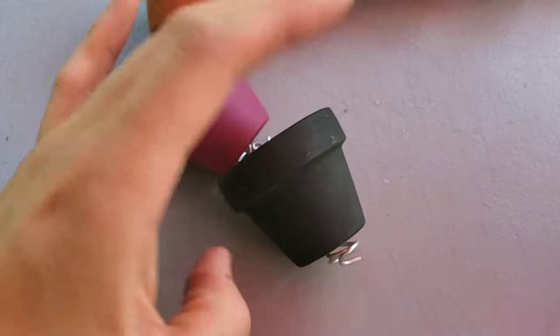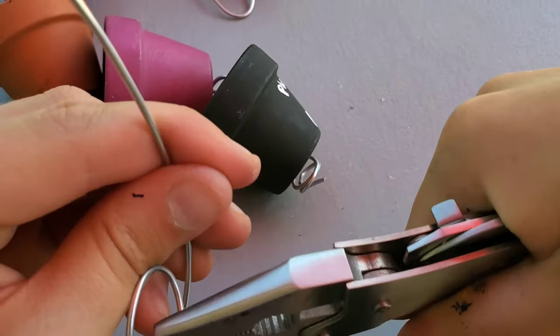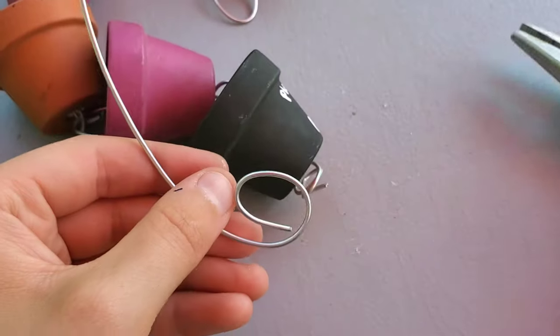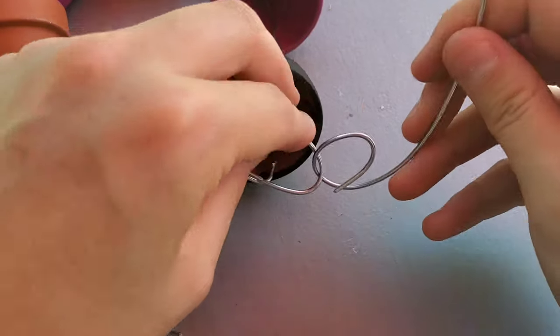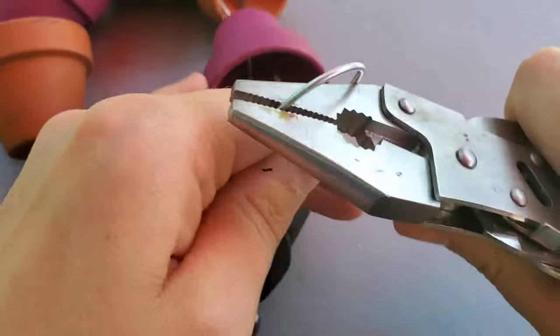After you have this last one secured in place, take another piece of wire and twist it into a circle. This is going to be used for your hanger. Attach this to the chain there, make it tighter, and create a loop at the end.